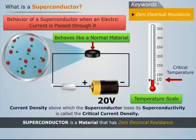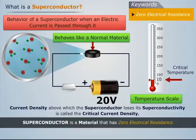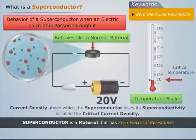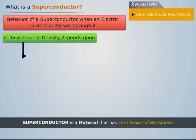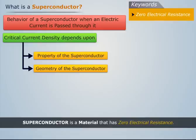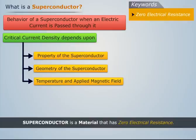The current density above which the superconductor loses its superconductivity is called the critical current density. It depends upon the property of the superconductor, geometry of the superconductor, temperature and applied magnetic field.